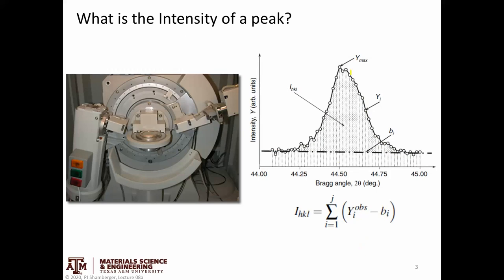It's important to understand that we don't usually use the maximum counts at the detector as a measure of intensity. Instead, we integrate the area under a particular peak. The background is subtracted, and the intensity is calculated by taking the difference between the measured points and the calculated background, then summing it over the entire width of the peak, with very small angular steps from one data point to the next.